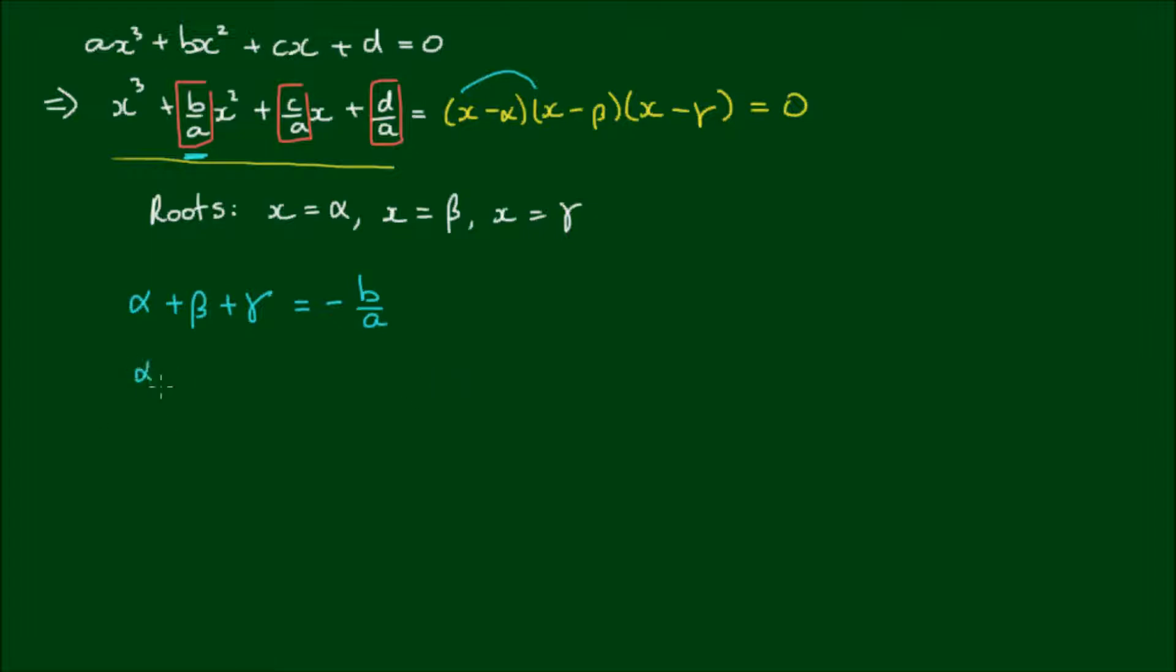Next, αβ plus αγ plus βγ is equal to positive c on a. So this is the linear coefficient, or the x coefficient. And finally, the multiplication of all the coefficients, α times β times γ is equal to negative d on a. So this is the free term.